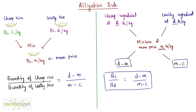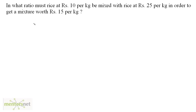So let us look at a question. In what ratio must rice at 10 rupees per kg be mixed with rice at 25 rupees per kg in order to get a mixture worth 15 rupees per kg? This is a pretty straightforward question. We have C equal to 10 and D equal to 25, and we have been given the mean price M equal to 15.